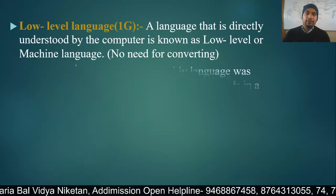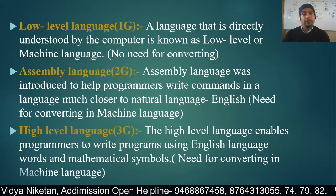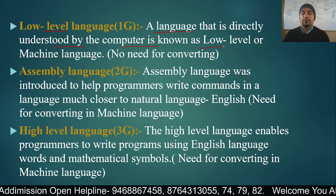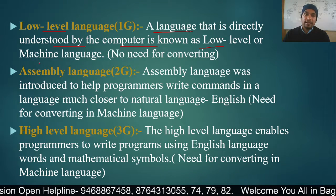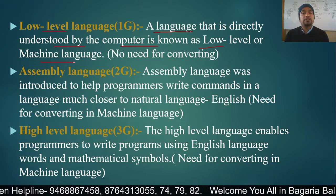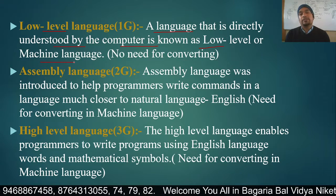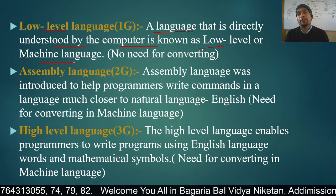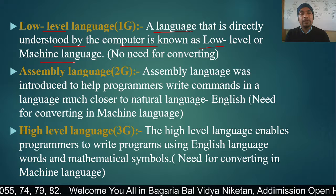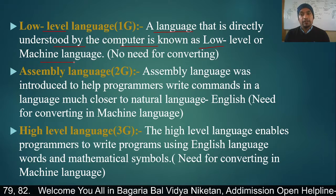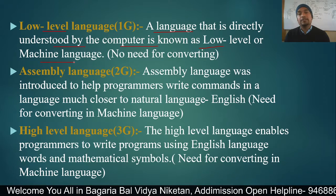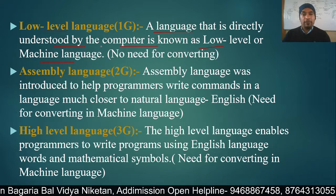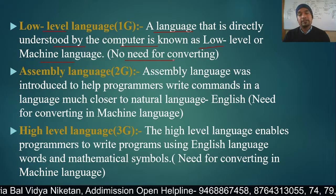A language that is directly understood by the computer is known as low-level or machine language. Low-level language works on 0s and 1s, the binary format. Because the computer understands 0-1 directly, there is no need for converting. Normally, if we write ABCD, conversion would be necessary because the computer only understands 0-1 format. That's why low-level language requires no conversion.